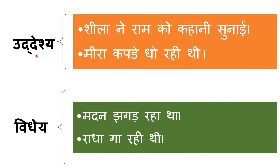Let's take some examples to make clear what is uddeshya and vidhev. Sheela ne raam ko kahaani sunai — here who is being spoken about? Sheela. So Sheela is the uddeshya. Kahaani sunai is the vidhev. Meera kapde dho rahi thi — Meera was washing the cloth. Here Meera is the uddeshya. Madan jagad rahaa tha — what was Madan doing? Jagad rahaa tha — that is vidhev.